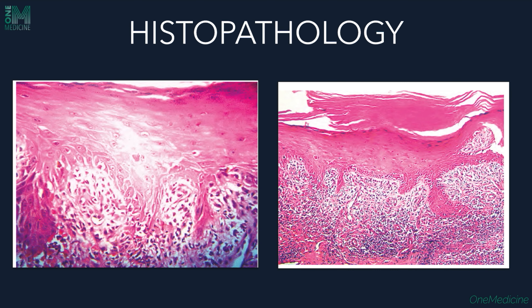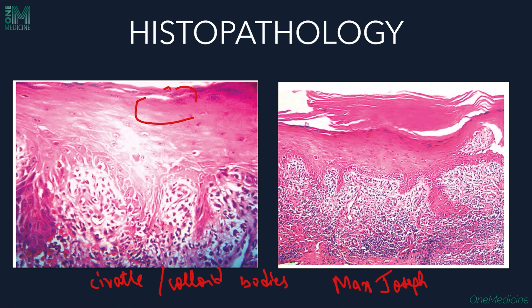Histopathology of Lichen Planus is very characteristic. Features include compact hyperkeratosis, wedge-shaped hypergranulosis, irregular acanthosis with saw-tooth appearance of the rete ridges, vacuolar degeneration of the basal layer, and a band-like inflammatory infiltrate at the dermo-epidermal junction. Civatte or colloid bodies — degenerated keratinocytes — are seen at the dermo-epidermal junction. Max-Joseph spaces represent separation between the epidermis and dermis due to interface (lichenoid) dermatitis. Direct immunofluorescence shows ragged and shaggy fibrin at the basement membrane zone along with globular deposition of colloid bodies and immune complexes.